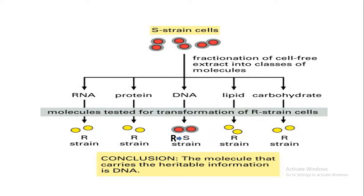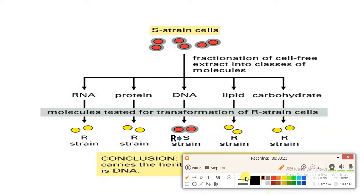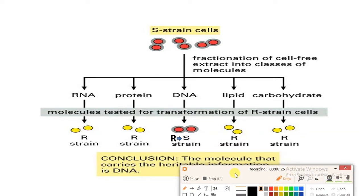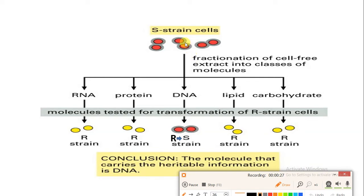In their experiment, they took a strain called S-strain. First of all, this S-strain was heat-killed, and as a result, many fragments were made. In these fragments, RNA was present, along with protein, DNA, lipid, and carbohydrate — all present as fragments because of the heat-killing of the S-strain.